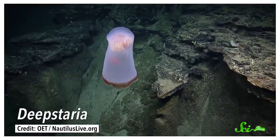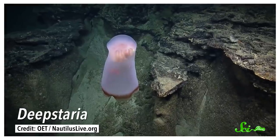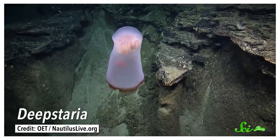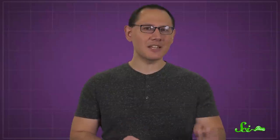Meet Deepstaria. This weird-looking creature has been mistaken for a lot of things, including a whale placenta and a sea monster, as well as a garbage bag. And less often, it's recognized for what it is, a jellyfish. But it's a jellyfish that always seems to have a friend in tow, and we have no idea why.